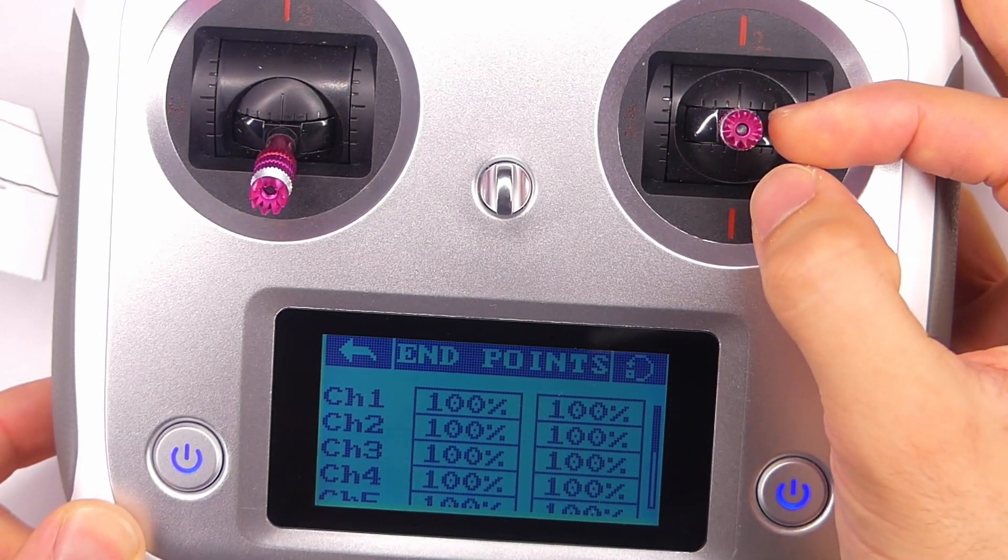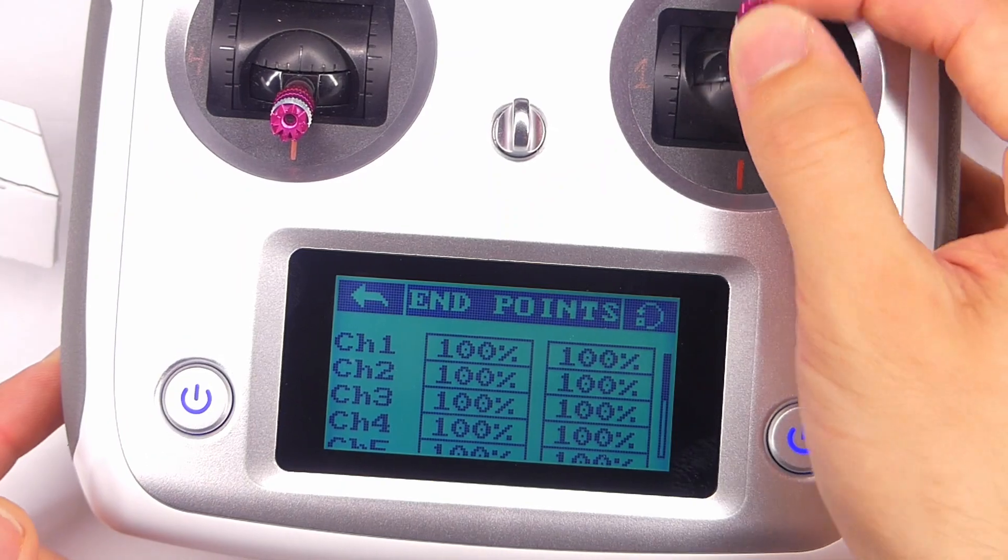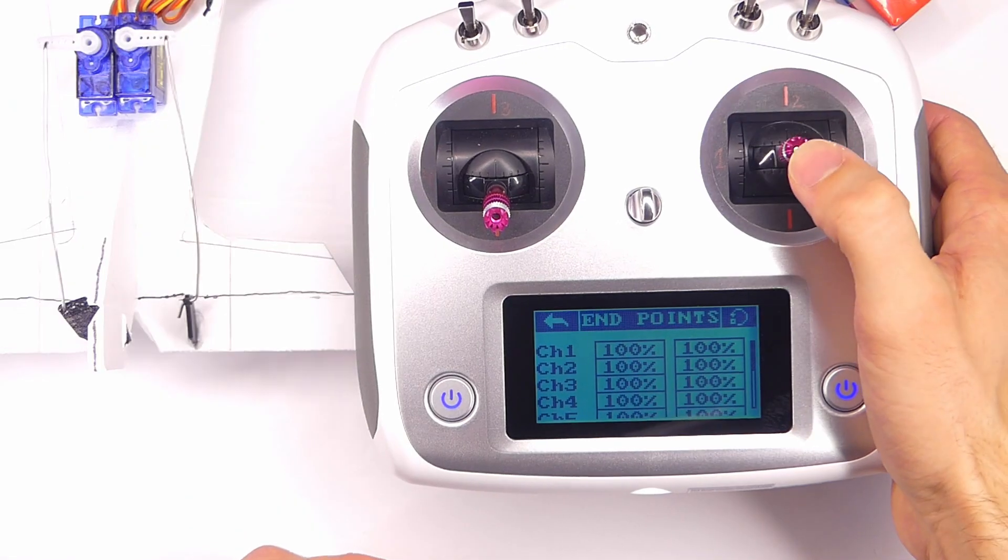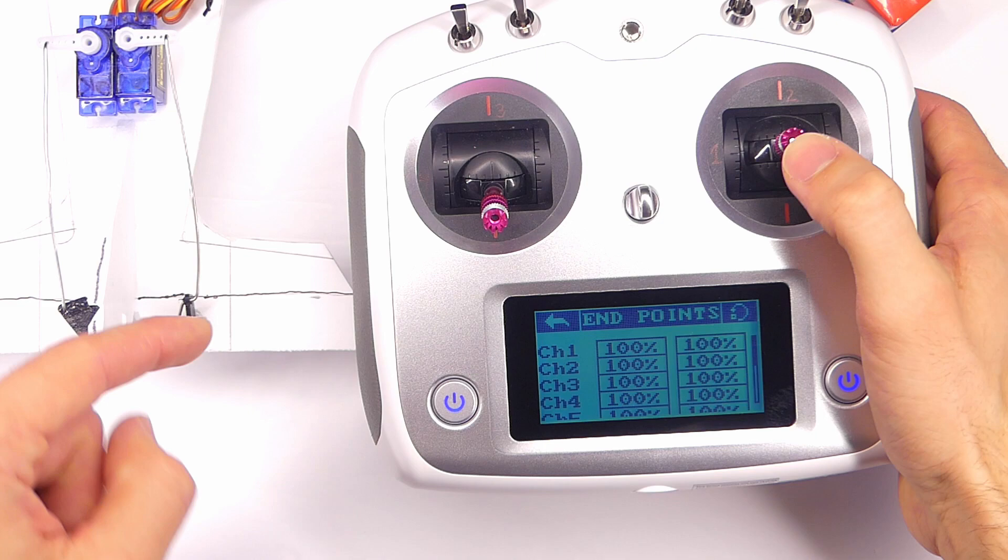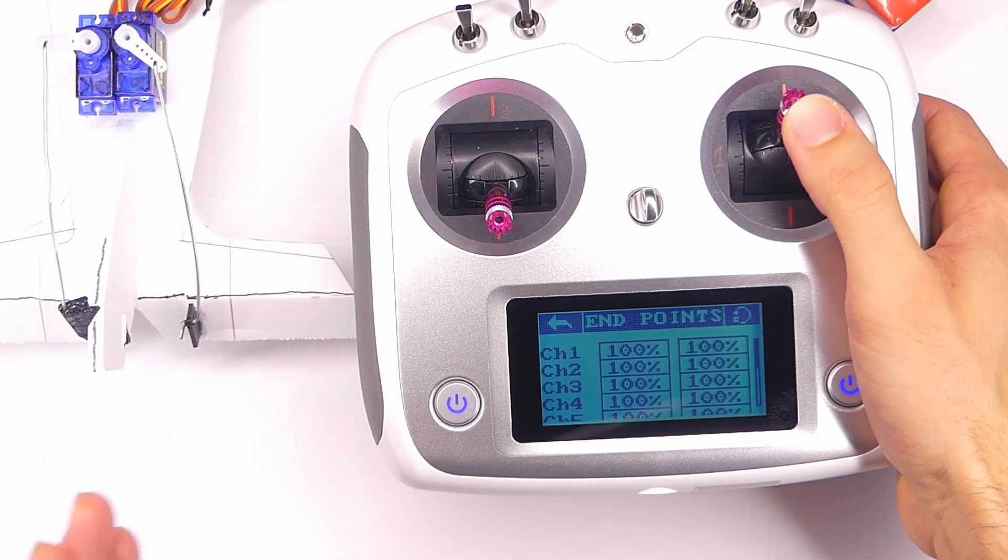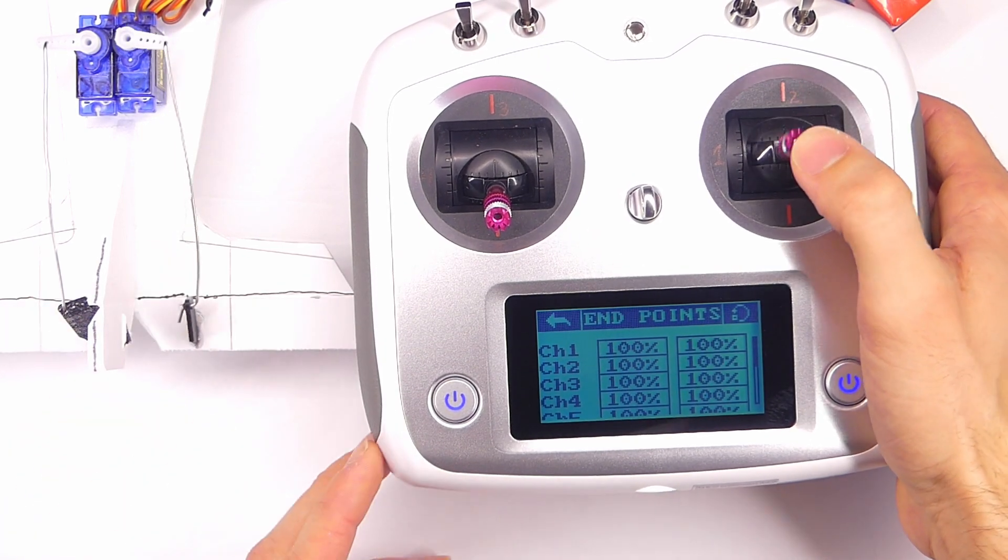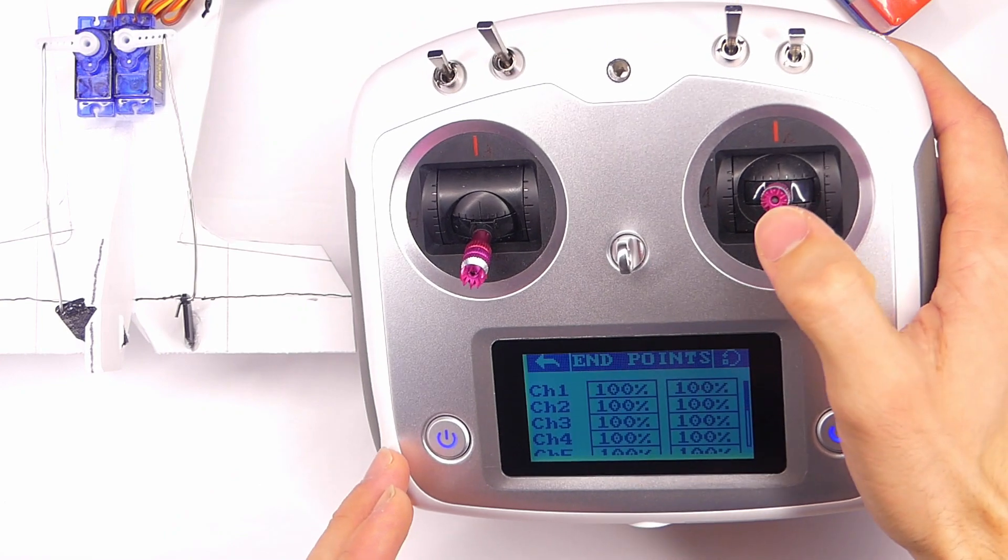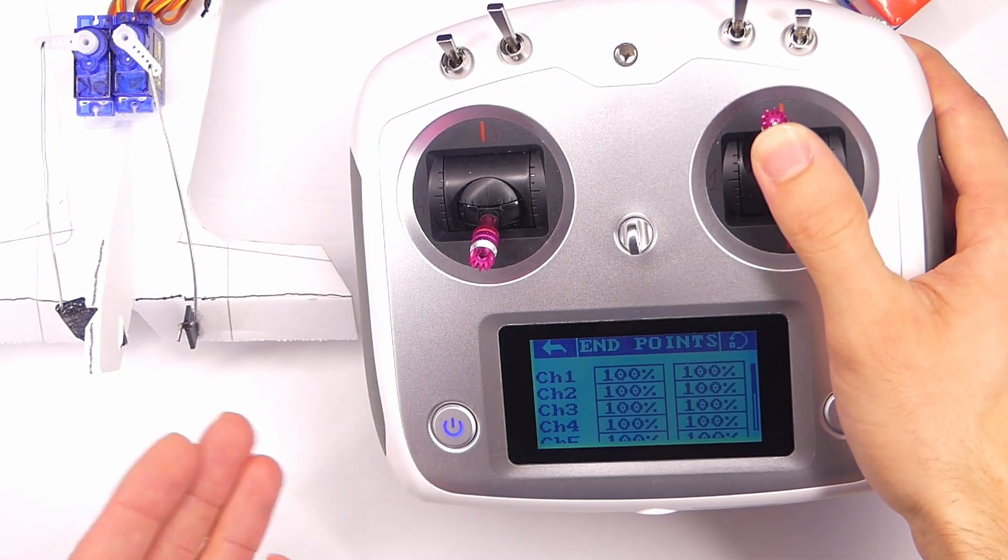For this, we're going to be using channel two for our elevator right here. If we're pushing the stick forward, the elevator goes downward, which means our nose would point down. And so if we want to limit that, one thing I like to do is just put the stick all the way forward in that position.